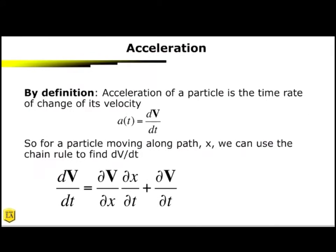So acceleration. By definition, acceleration of a particle is the time rate of change of its velocity. So here's the traditional way you've seen this in the past, right? So for a particle moving along a path, we can use the chain rule to find dV/dt. So here we separate out dV/dt into dV/dx dx/dt plus dV/dt. So this is how we're using the chain rule.